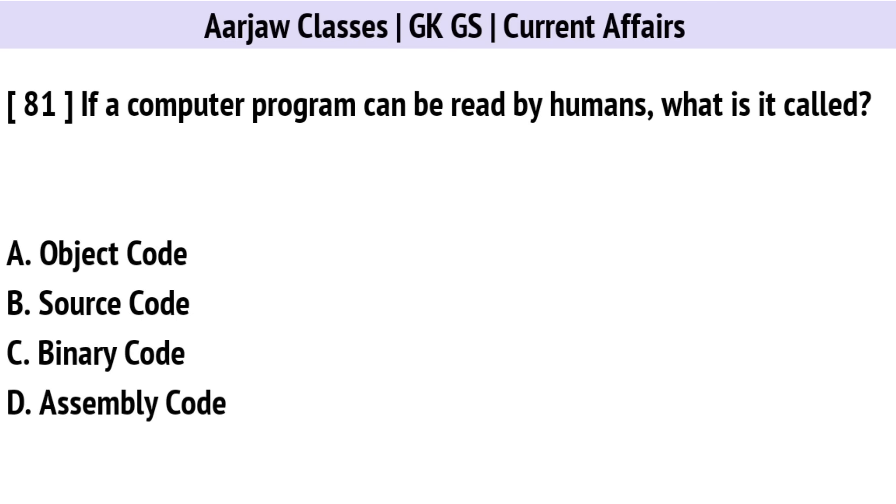If a computer program can be read by humans, what is it called? The correct option is B: Source Code.